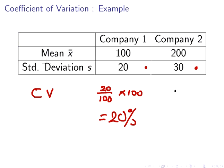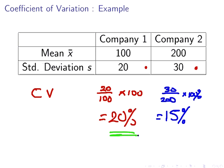In this case, we have 30 divided by 200, expressed as a percentage, and we get 15%. And this is for Company 2. So it is actually Company 1 that has the higher relative variability as expressed by the coefficient of variation.